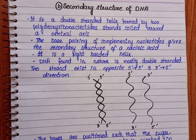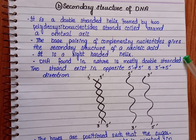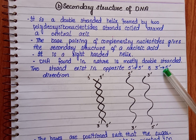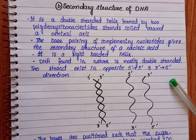When these two strands are joined together, complementary nucleotide bases are present. The base pairing of complementary nucleotides gives the secondary structure of the nucleic acid, and it is a right-handed structure. Most of the DNA found in nature is predominantly a right-handed structure.